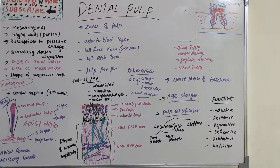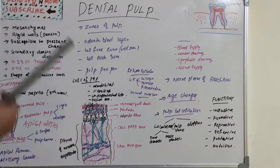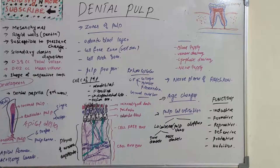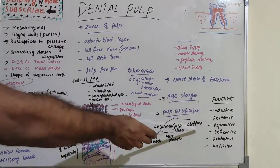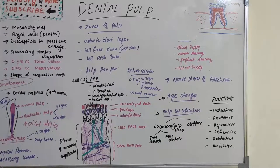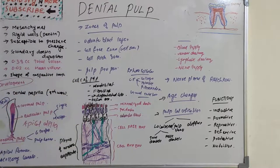Pulp stones are classified according to their location as free, attached, or embedded. Free pulp stones are free within the pulp; attached ones are attached to dentine; embedded ones are within the dentinal walls. Close proximity of pulp stones to blood vessels may cause atrophy. Diffuse pulp calcification commonly occurs on top of hyaline degeneration in the root canal. They are irregular calcific deposits in the pulp tissue following the course of blood vessels, and advancing age favors their development.